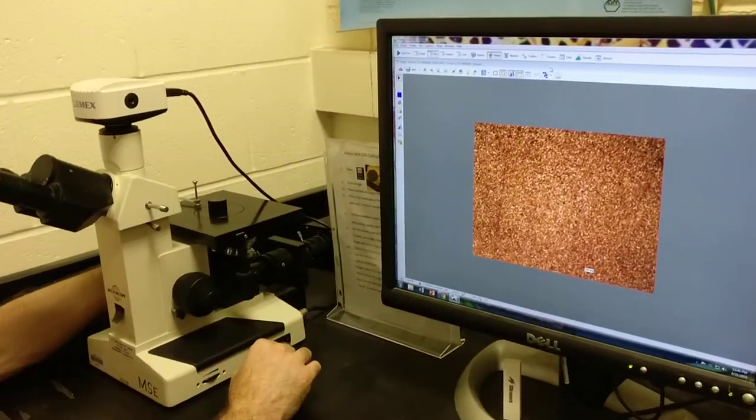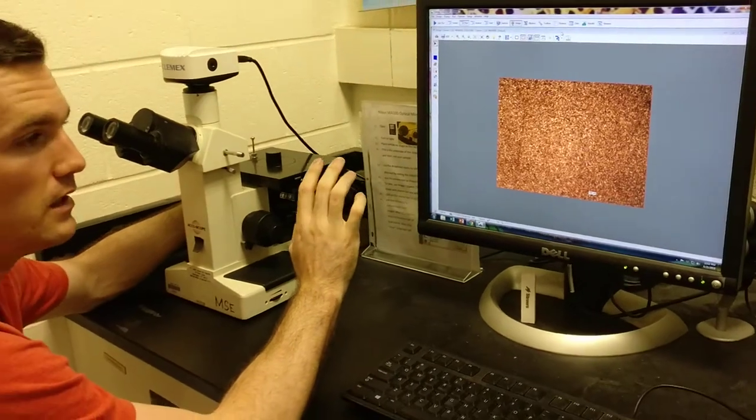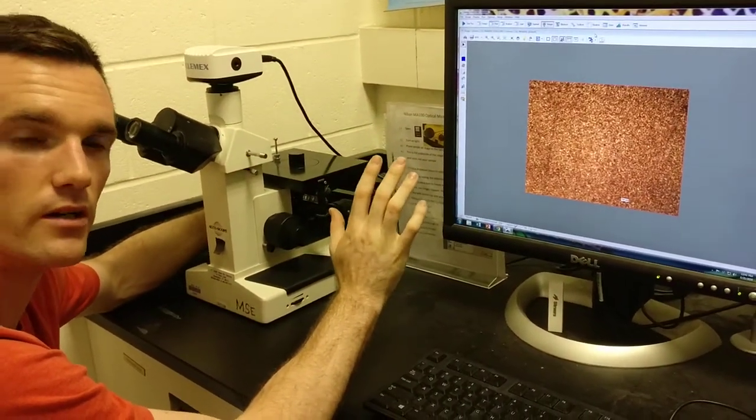So we have 50x here. We're going to take microstructure images probably around 200x to 400x so that we can actually see grains. And grains appear around that size.